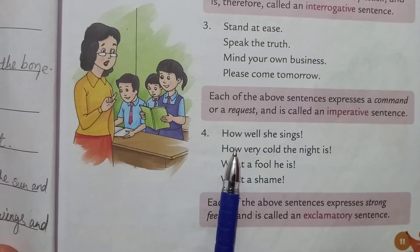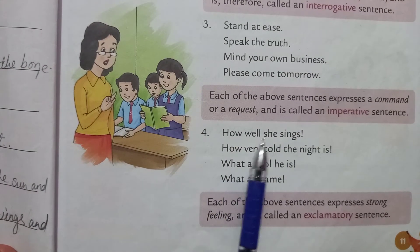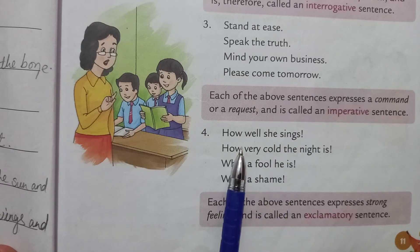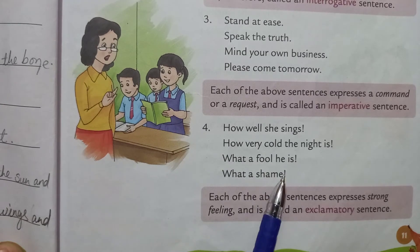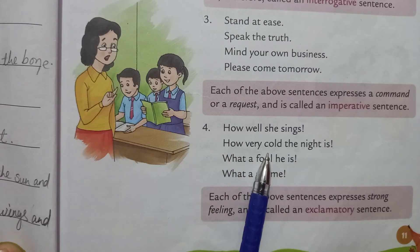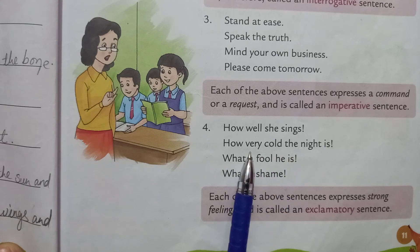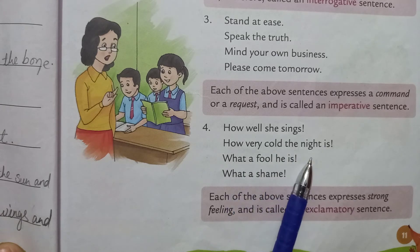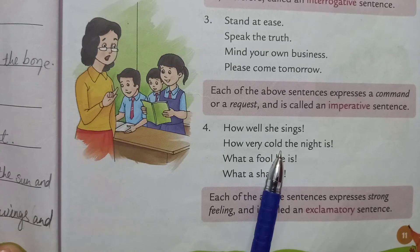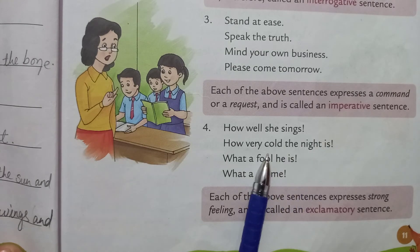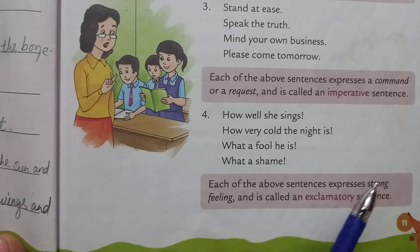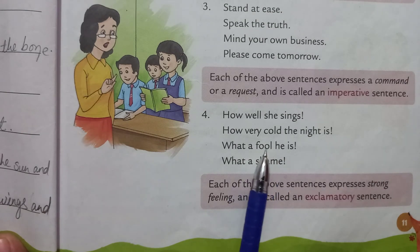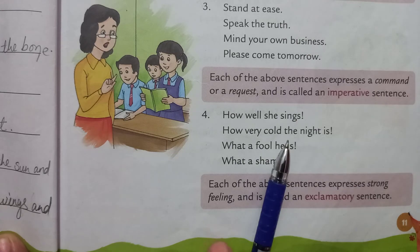Now see the fourth kind. 'How well she sings! How very cold the night is! What a fool he is! What a shame!' When a sentence expresses strong feeling, it is called an exclamatory sentence. Each exclamatory sentence has an exclamation mark at the end. Each of the above sentences expresses strong feeling and is therefore called an exclamatory sentence.